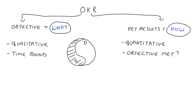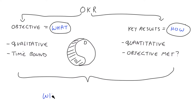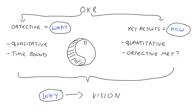But before we get into the question of what and how, we first need to answer the question of why. Why are we doing this in the first place? What is the driving motivation behind it? In a company, we can look at the vision to answer the question of why — it is the bottom line reason the company exists and is the driving force behind everything the company does.